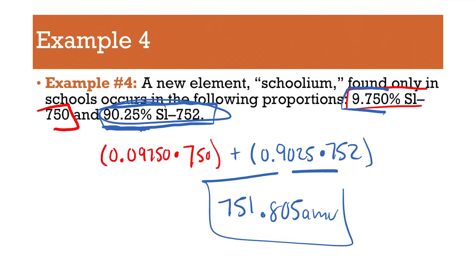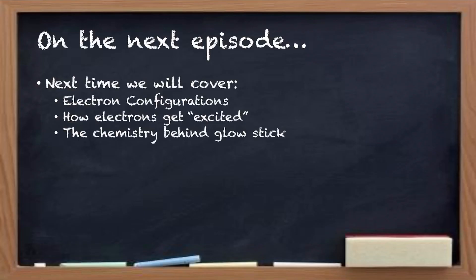We're going to continue with this more. So, if you're still a little bit confused, it's totally okay. We are going to practice this more. So, on the next episode, you're going to talk about electron configurations, how electrons get excited, and how glow sticks glow. Bye.